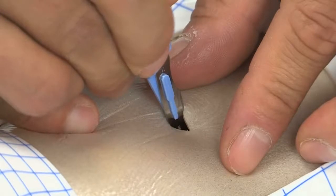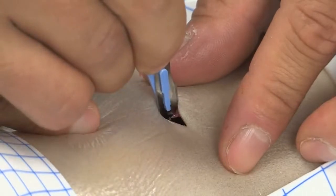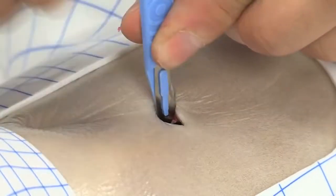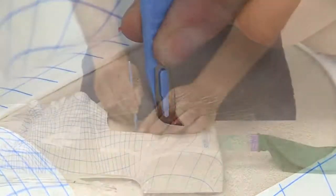While maintaining perpendicularity, the blade should be pulled towards the anesthetist, producing a triangular hole in the skin and underlying airway.